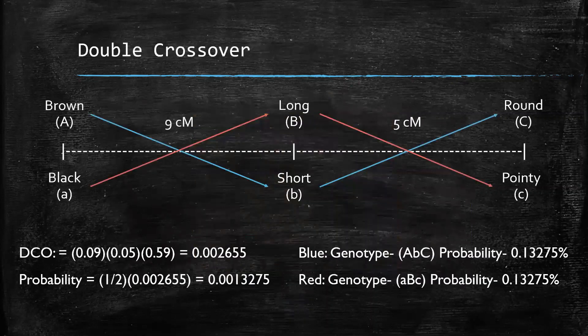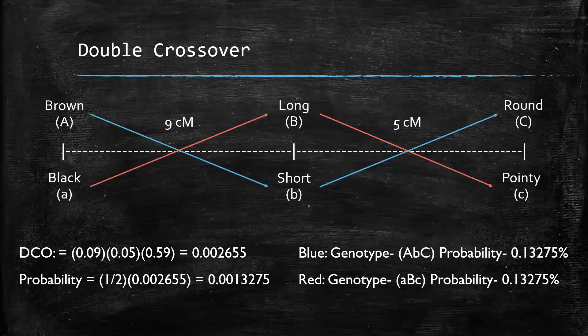First, we have our double crossover events. There are two possible gametypes because there are two possible double crossover events. Following the blue arrows, we can see our first gametype is big A, little B, big C. Following the red arrows, we can see our second gametype is little A, big B, little C.